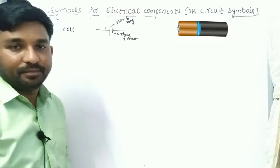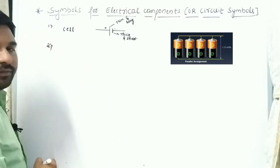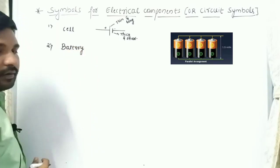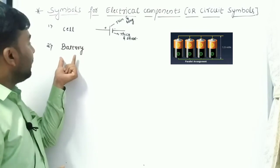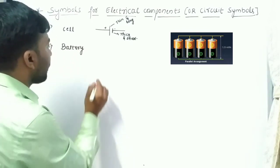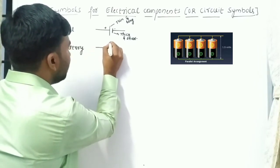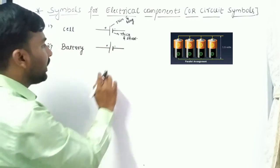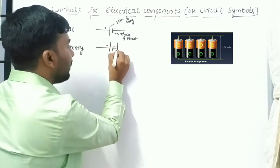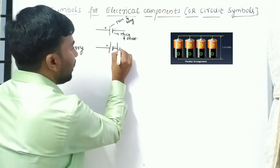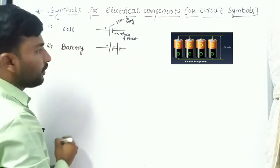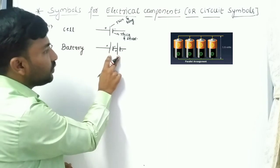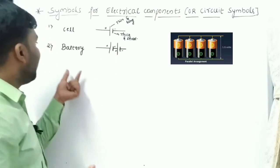The second component is a battery. A battery is a combination of two or more cells. Here I am drawing it: one single cell, then one more cell. The combination of two or more cells is a battery.